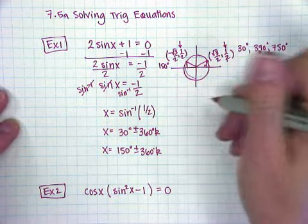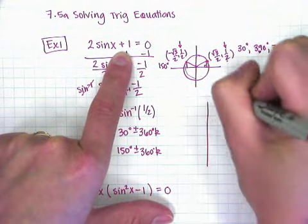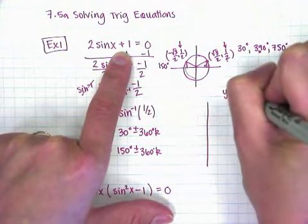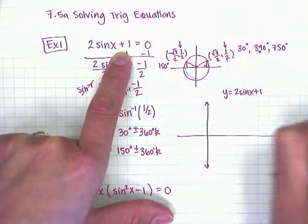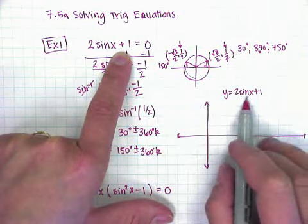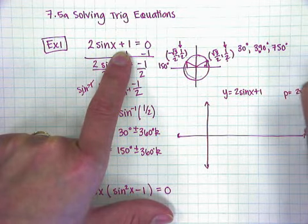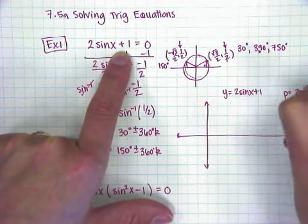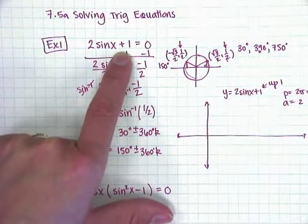Another way of thinking about the same thing is you could think about this as a graph. So if I were to graph y equals 2 sine of x plus 1. I know the period of the sine curve is 2 pi or 360. I know the amplitude of the sine curve is 2, and it's been shifted up 1.